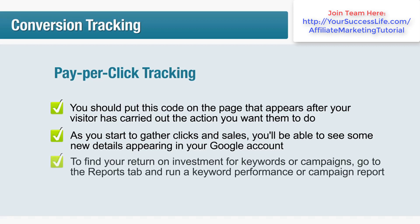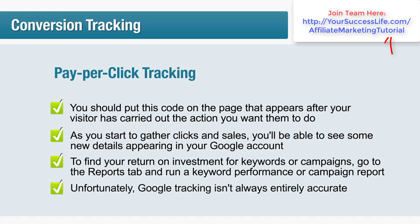To find your return on investment for keywords or campaigns, go to the reports tab and run a keyword performance or campaign report. Adding tracking codes for Yahoo and MSN is a very similar process, and there's nothing to stop you having all three codes on one conversion page. Unfortunately, Google tracking isn't always entirely accurate — if there are other affiliates also making sales on the product you're promoting, it's not uncommon for their sales to be mistakenly registered as yours. This is why we recommend using Google conversion tracking only as a rough indicator of how well each keyword is performing.